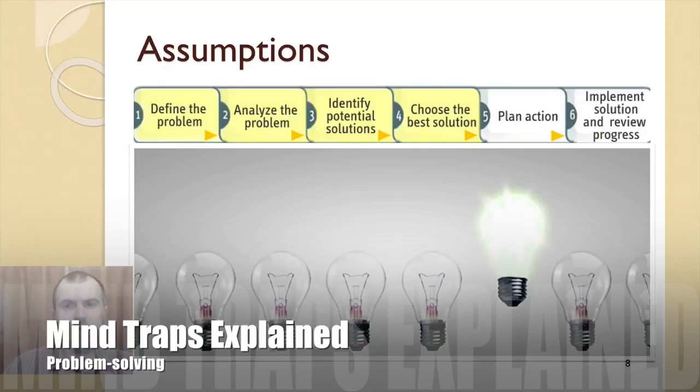The first four steps in the problem solving model that we presented at the beginning of this course are particularly vulnerable to the mind trap of assumptions. Define the problem is affected. The store owner assumed that the problem lay in the merchandise she was selling. So she failed to identify the real problem, which was competition over price. Analyze the problem. Based on her assumption about the nature of the problem, the store owner analyzed the types of clothing sold in each store. She determined the average age of customers in the area and investigated trends, indicating growing demand for high fashion items, including fashionable sportswear among less youthful sectors of the market. Identify potential solutions is also affected. The store owner generated potential solutions for the wrong problem. She considered options for altering her buying decisions, for example, to stock more fashionable clothing ranges and introduce new lines, such as sportswear, into her store.